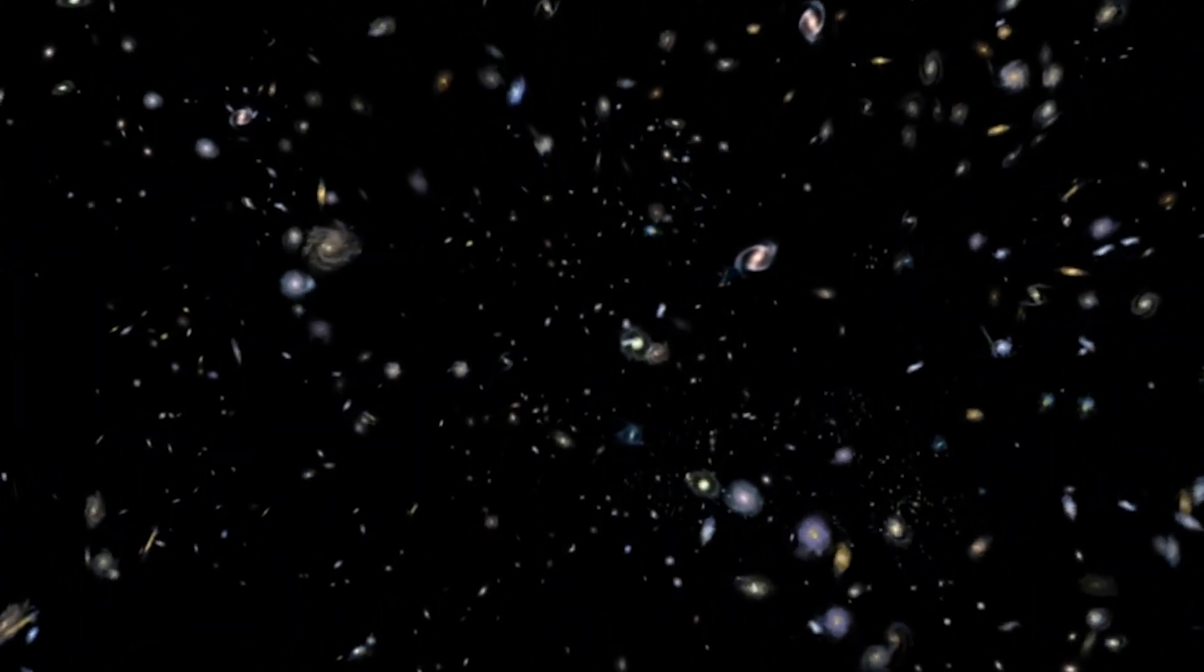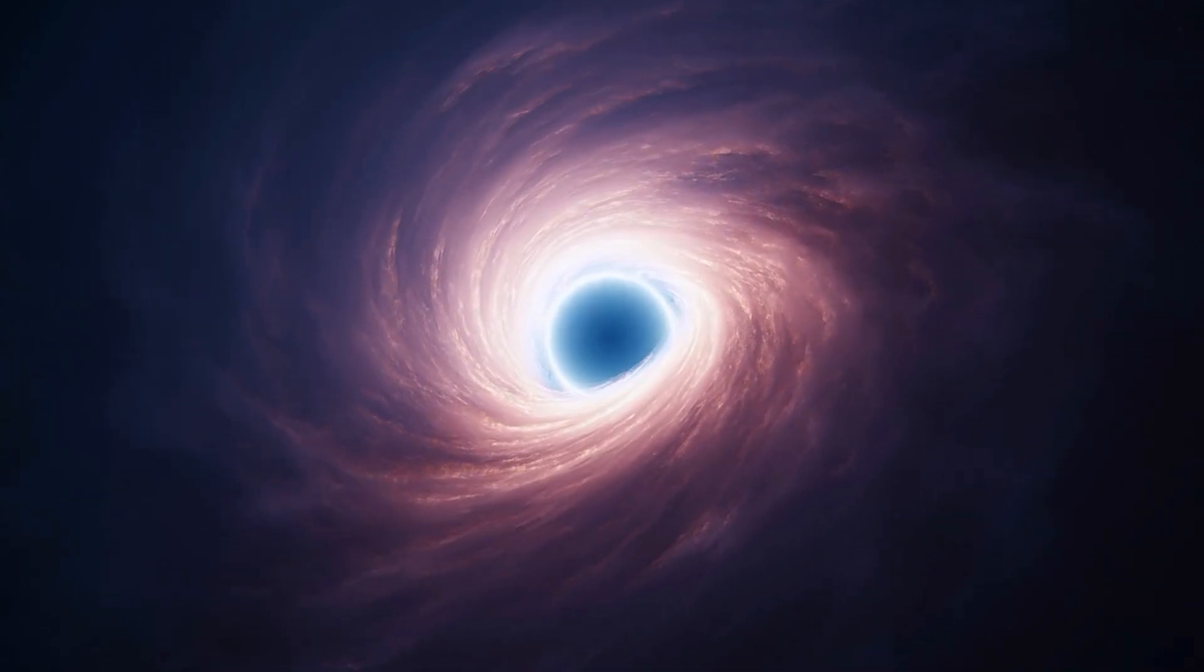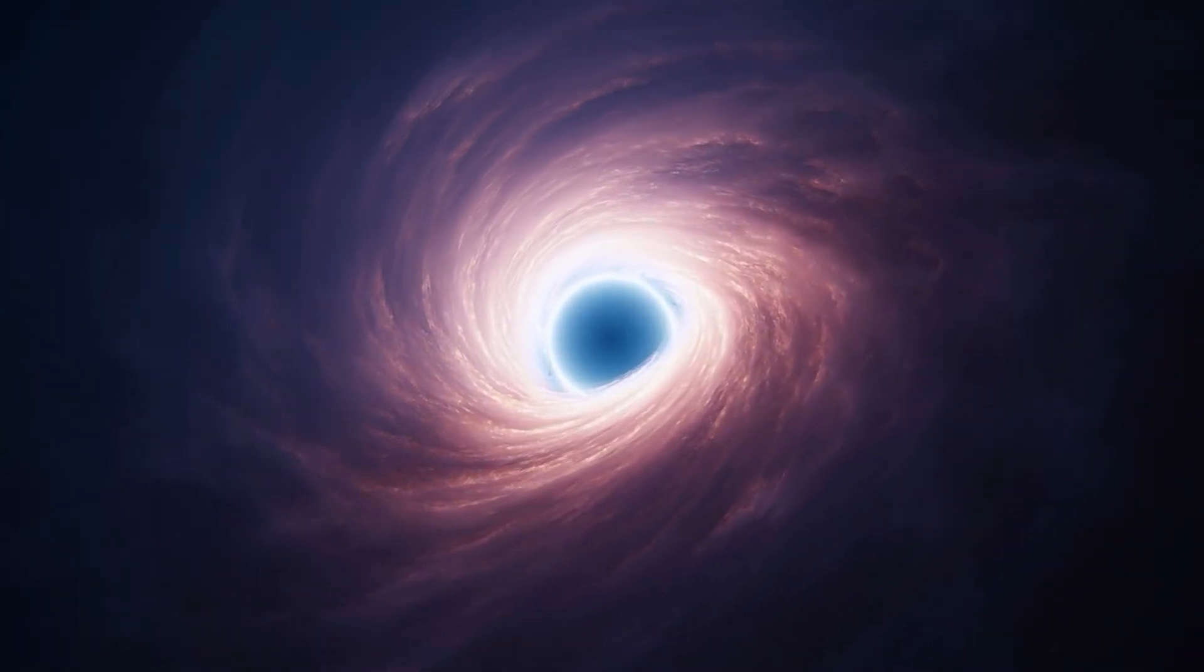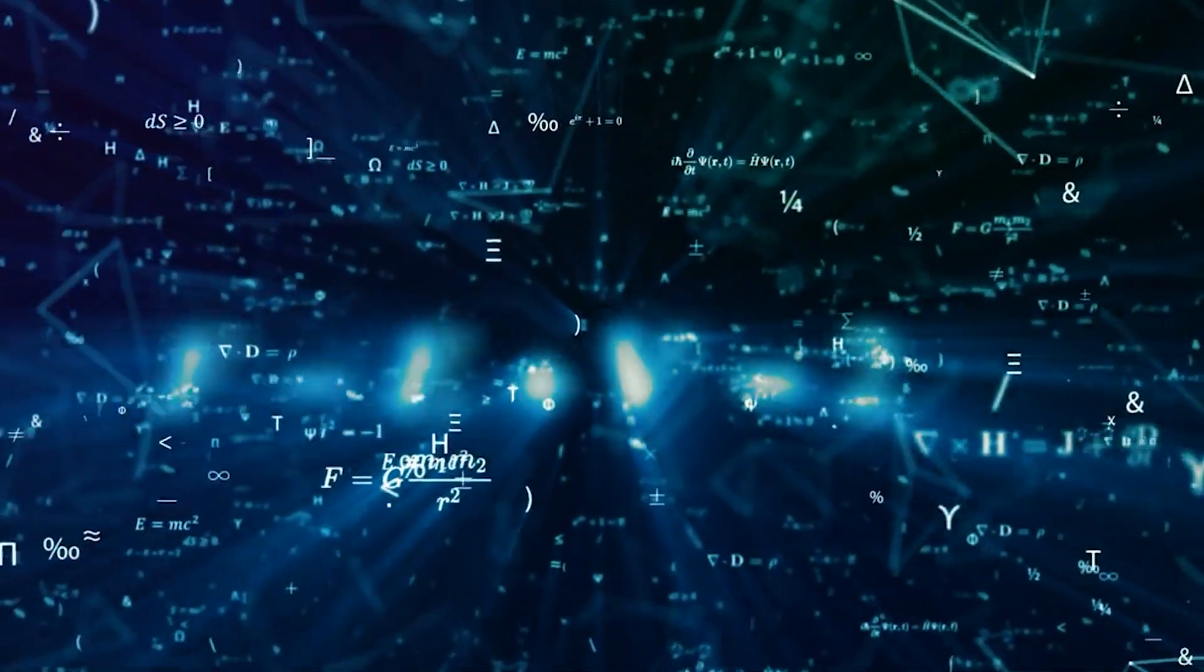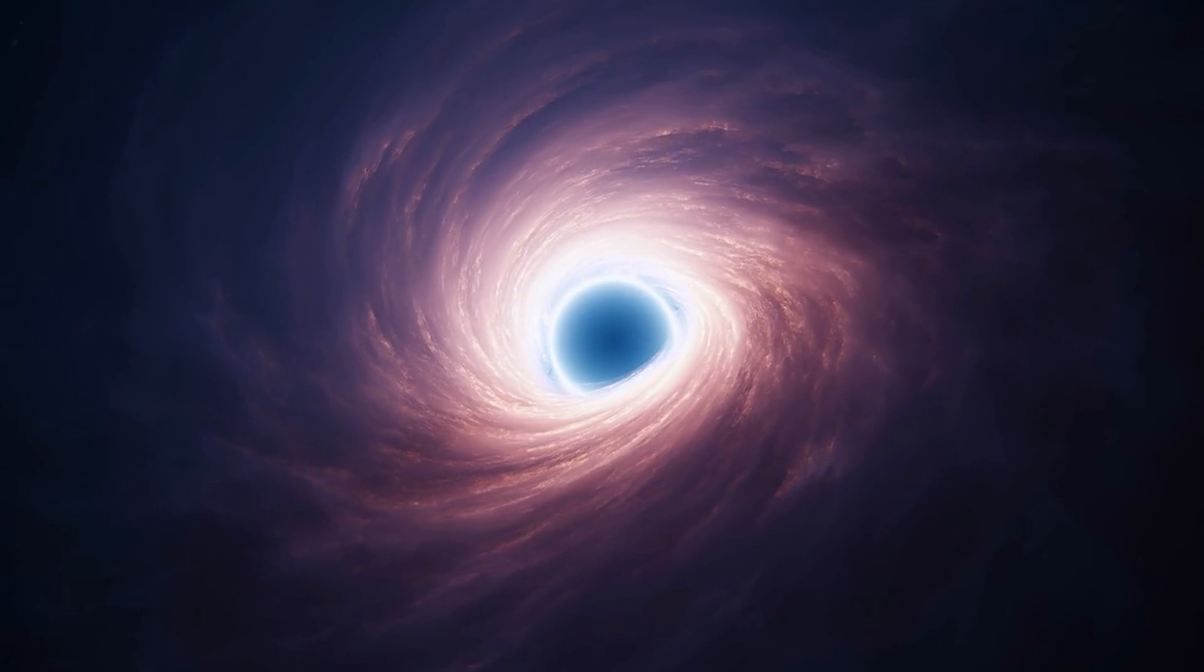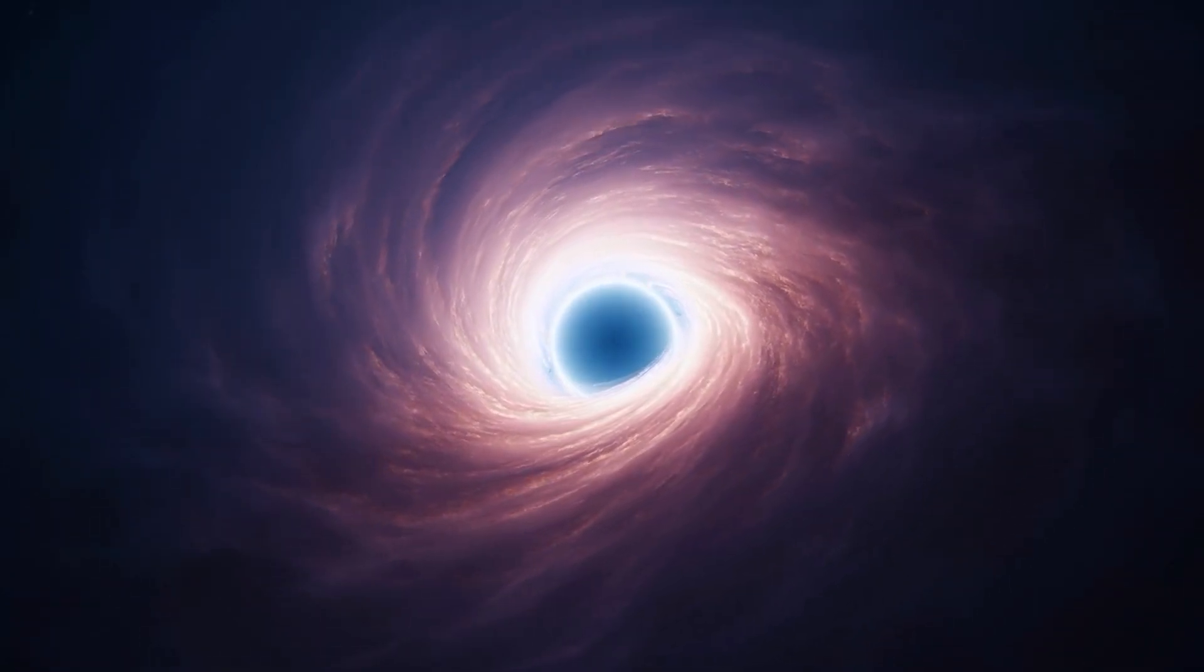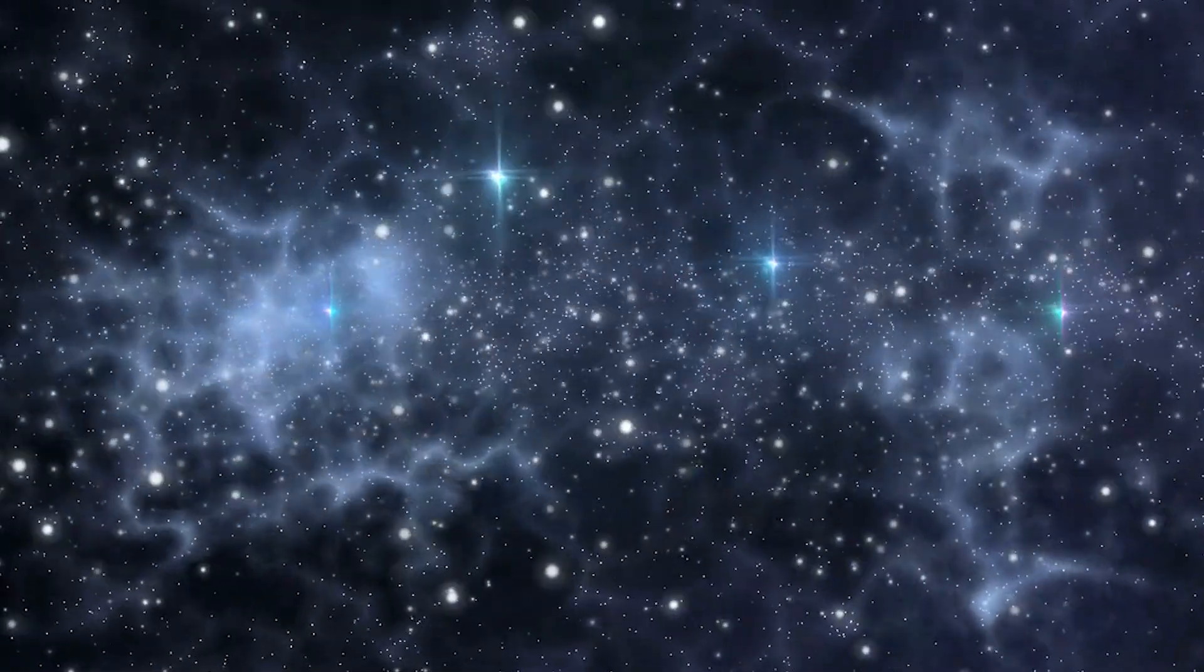So what does this mean for science? First off, it has a big implication for understanding black holes. Black holes are areas where both quantum mechanics and relativity clash. With this new equation, we might finally be able to explain why black holes do not collapse into a singularity and how they maintain their structure.